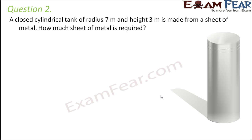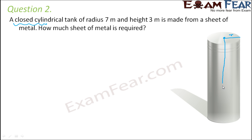Question number 2: A closed cylindrical tank of radius 7 meters and height 3 meters is made from a sheet of metal. How much sheet of metal is required? Note the keyword 'closed' — the top and bottom are both closed, so we must consider the total surface area. Radius is 7 meters and height is 3 meters.